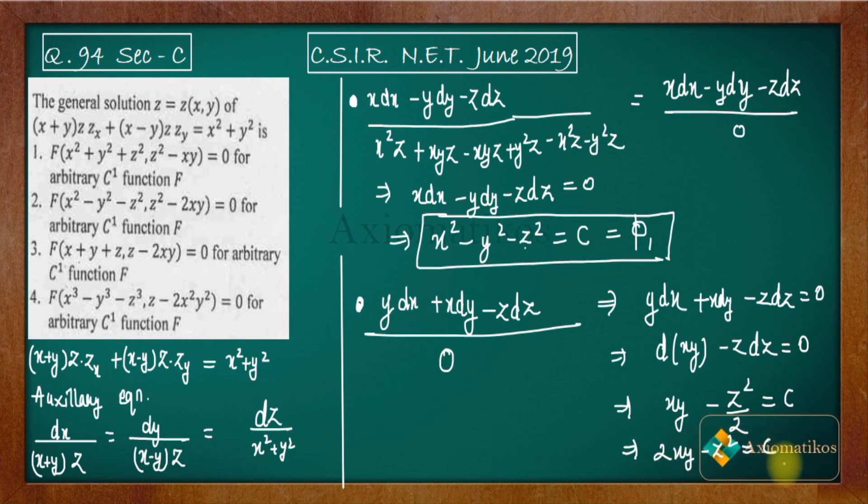So phi₂ equals 2xy - z². Your solution will be a function of phi₁ and phi₂.